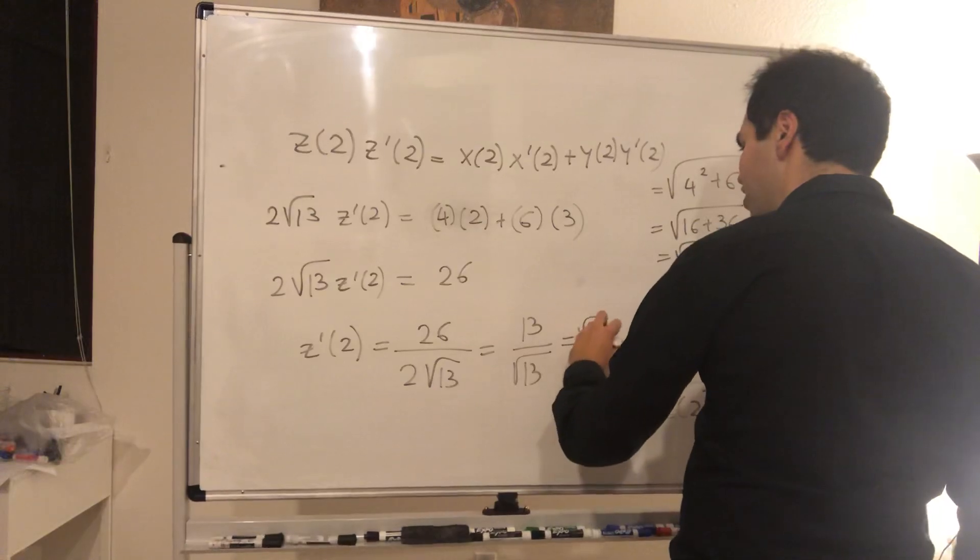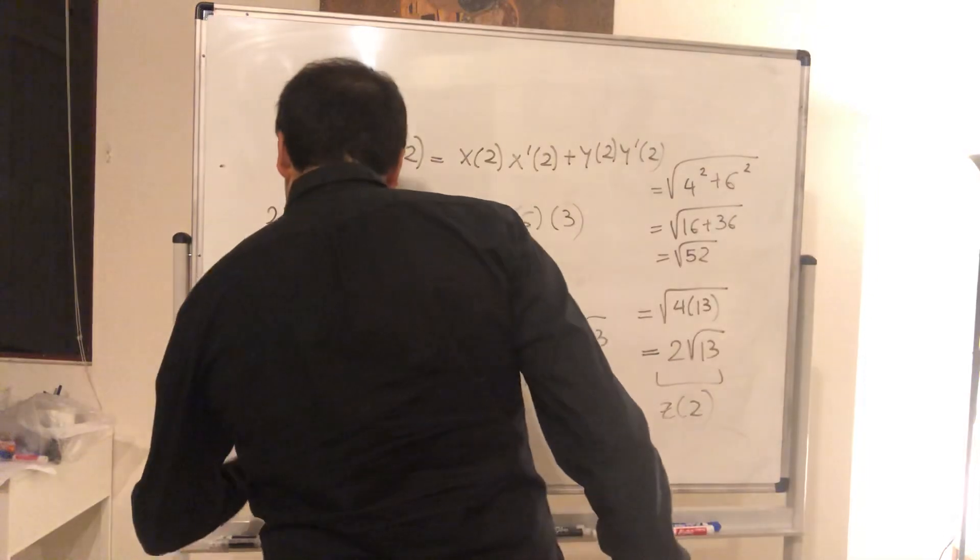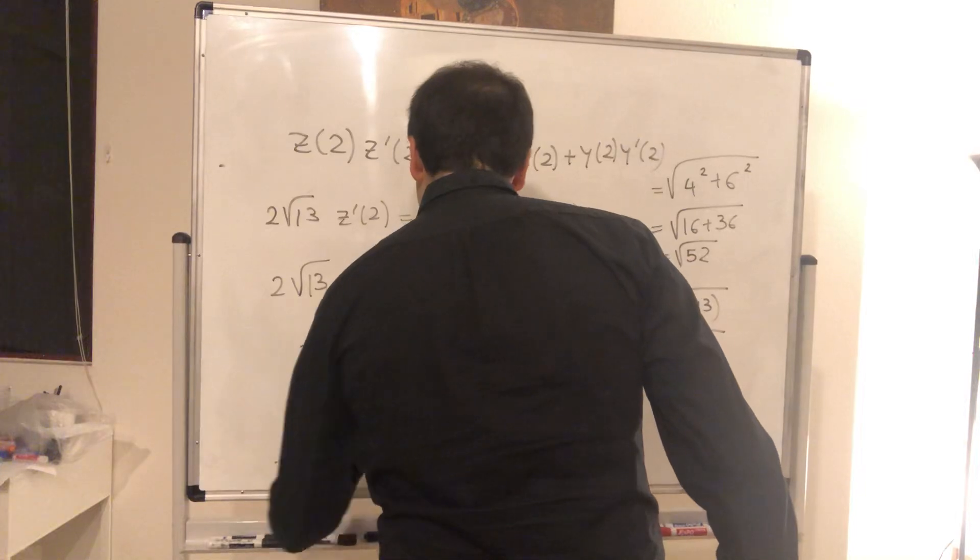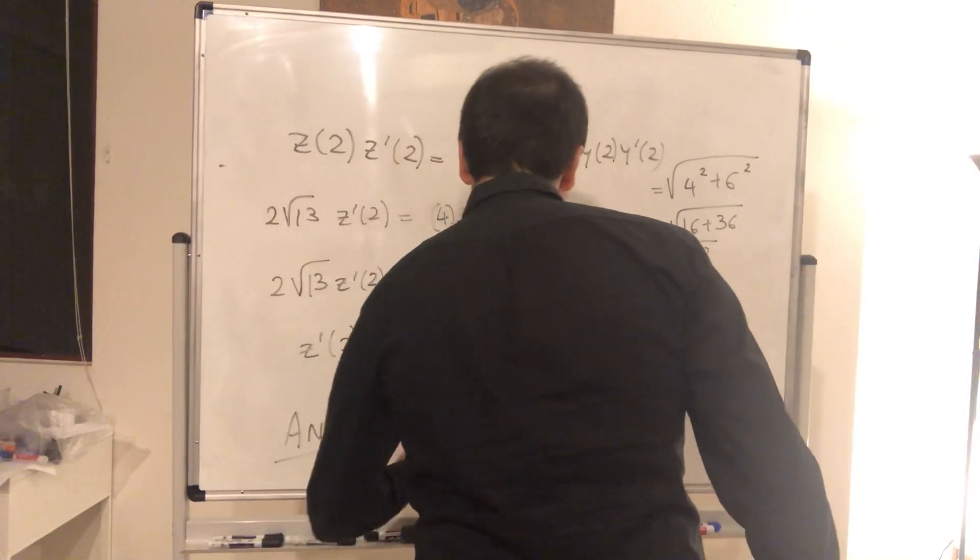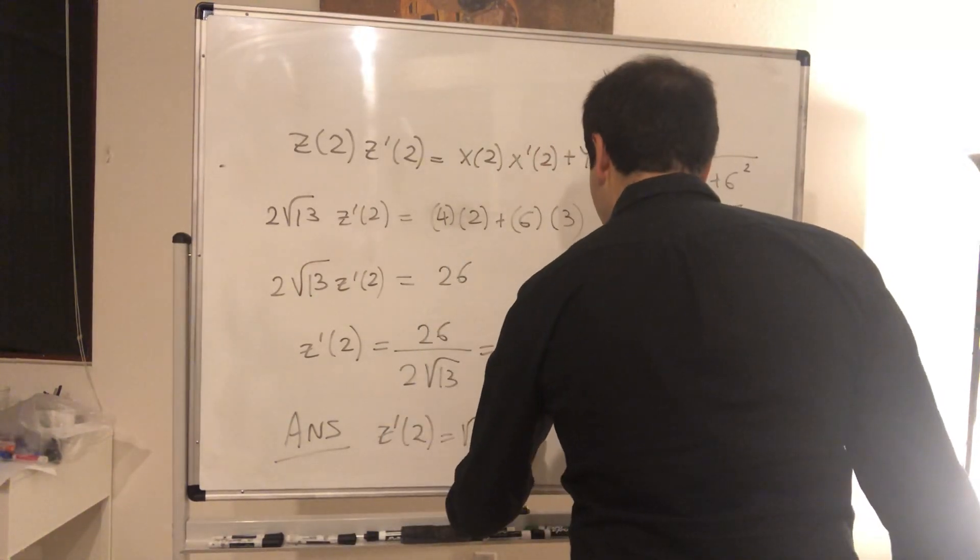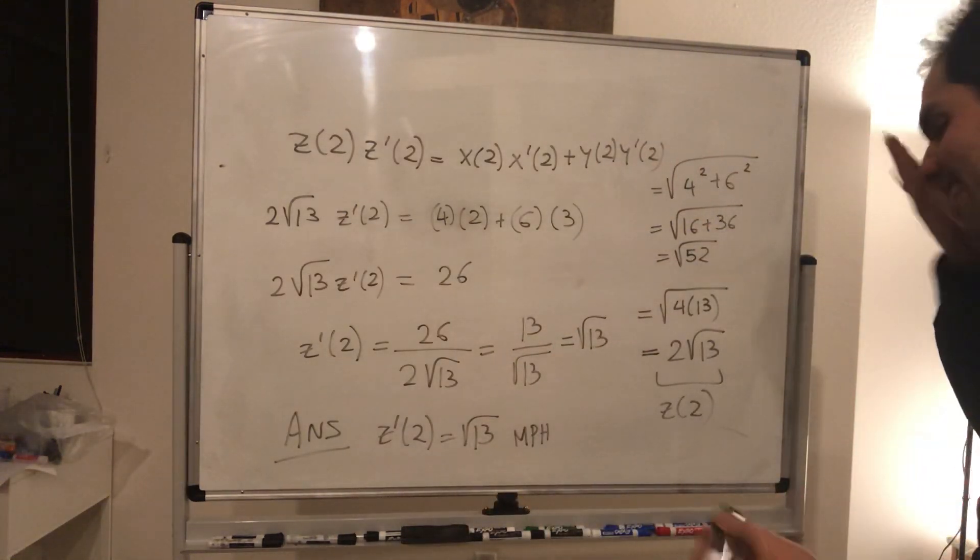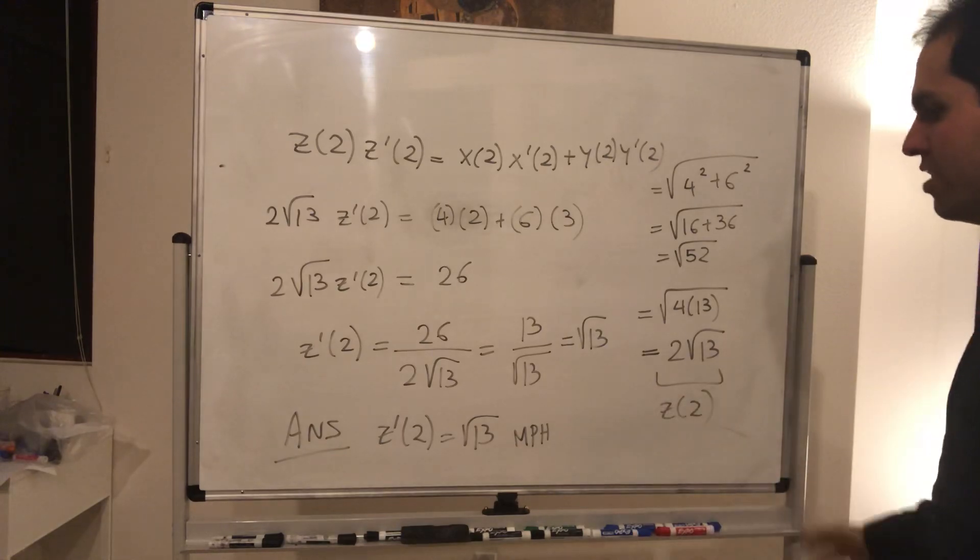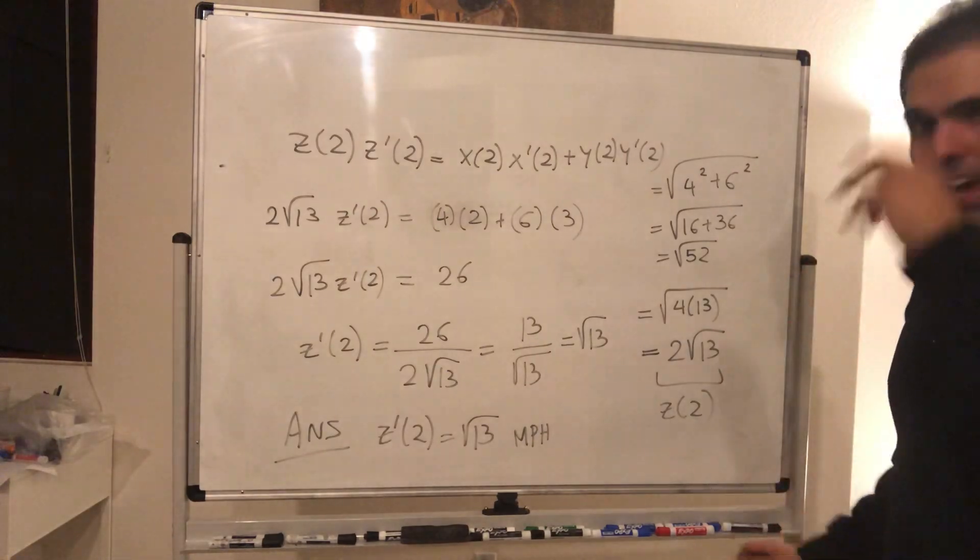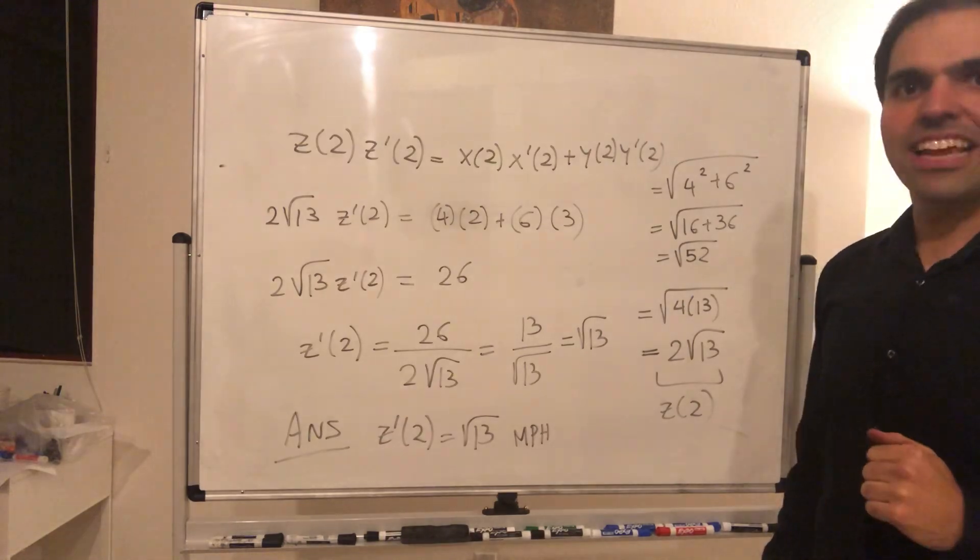So our answer is then, the distance, so z prime of two, after two hours the distance increases by square root of 13 miles per hour. Again, it's square root of 13, that's between 9 and 16, so square root of 13 is somewhere between 3 and 4. All right, I hope you like this. If you want to see more math, please make sure to subscribe to my channel. Thank you very much.